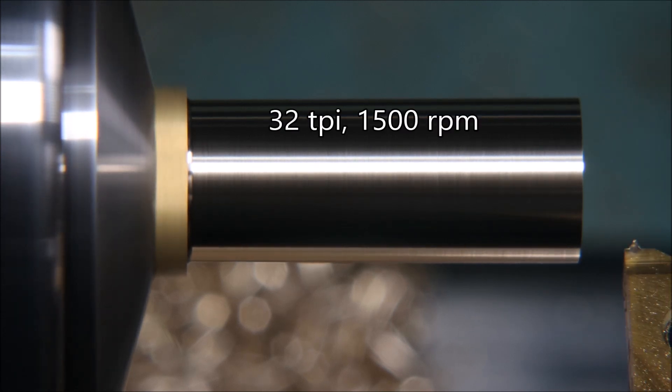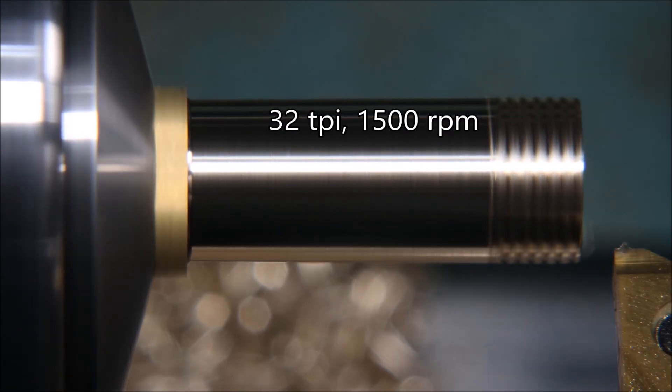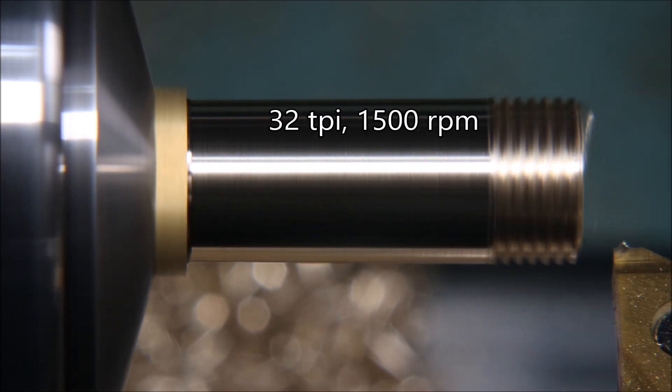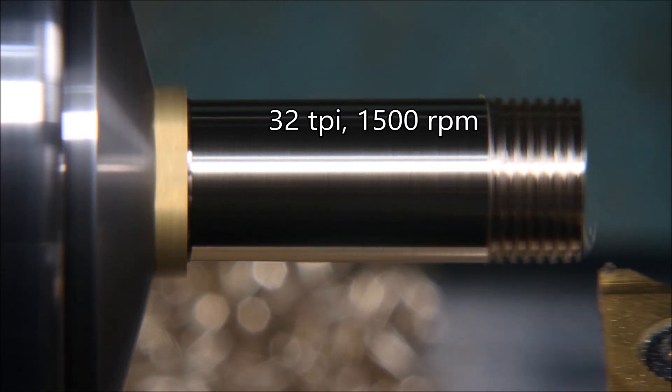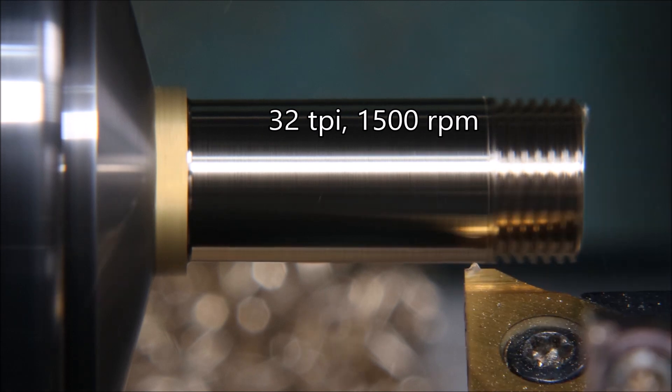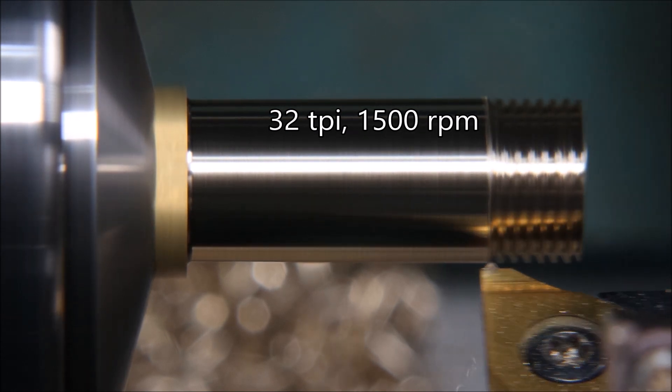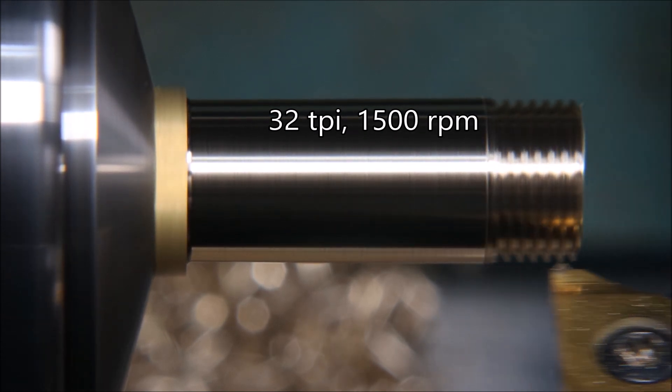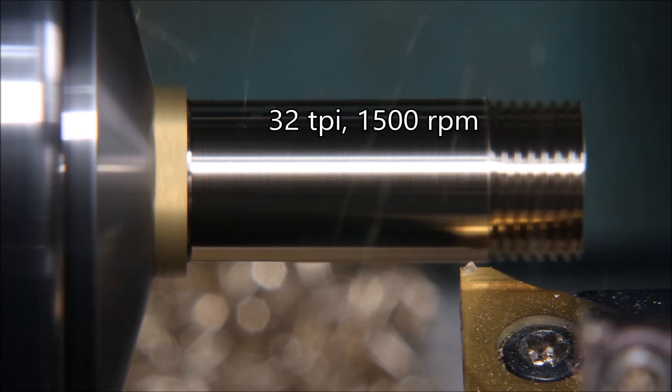Here we're cutting the thread which is 32 TPI. Slowed it down to 1500 RPM because at 3000 RPM the tool was just chattering so much. In fact, even at 1500 it still seems to be chattering a bit.